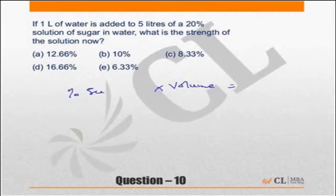So percentage of sugar times volume should equal the quantity of sugar.